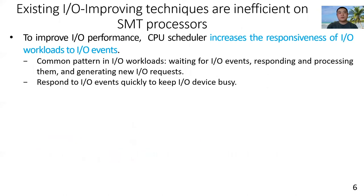The second reason is that existing techniques for improving IO performance are inefficient on SMT processors. To improve IO performance, CPU scheduler increases the responsiveness of IO workloads to IO events, in order to respond to IO events quickly to keep IO devices busy.